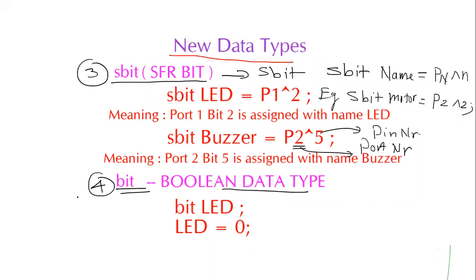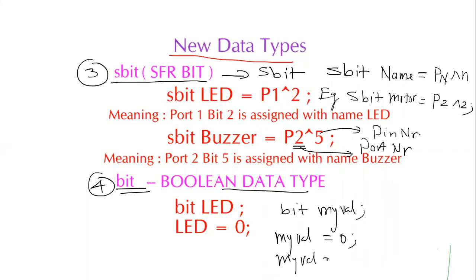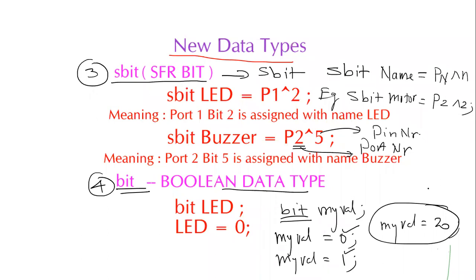The fourth data type is the bit data type — a Boolean type used for declaring a single bit value of 0 or 1. For example: bit myValue; — myValue can only hold 0 or 1. If you assign myValue = 20, the compiler will not give an error, but it is a ridiculous assignment since a bit variable cannot hold values greater than 1. Be careful when using this data type.